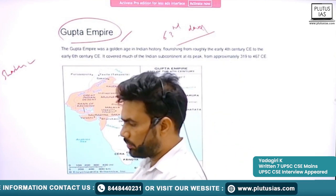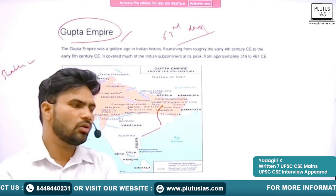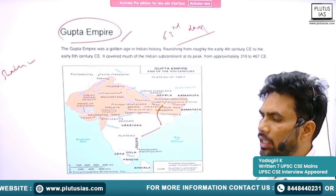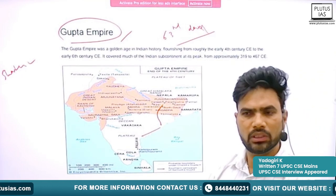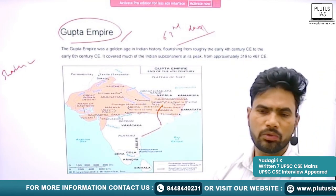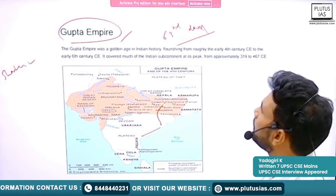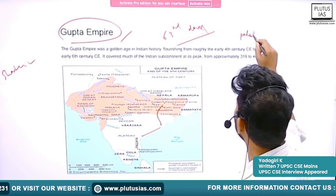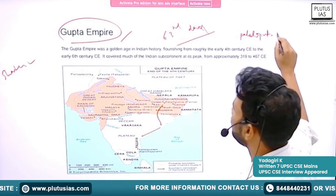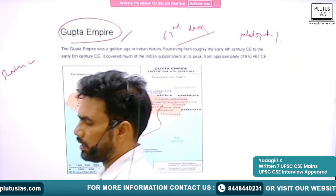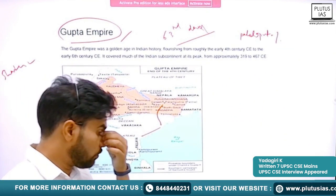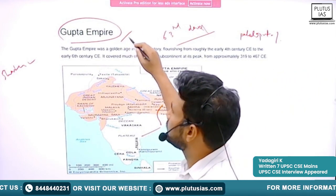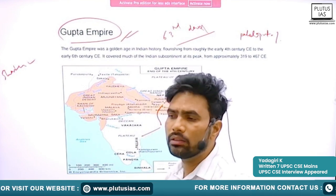The Shatavahanas also contributed a lot in the fields of art and architecture. After the Shatavahanas, with Pataliputra — modern-day Patna — as the capital, another dynasty emerged known as the Gupta dynasty or Gupta Empire.